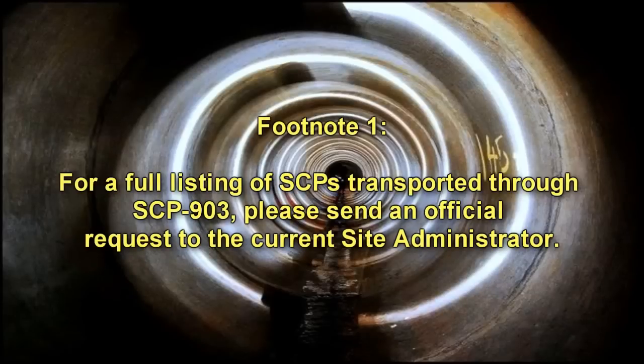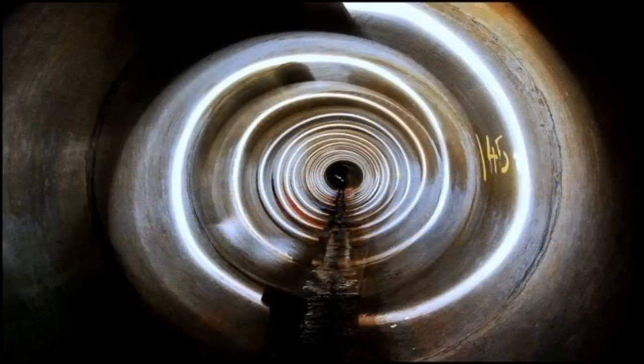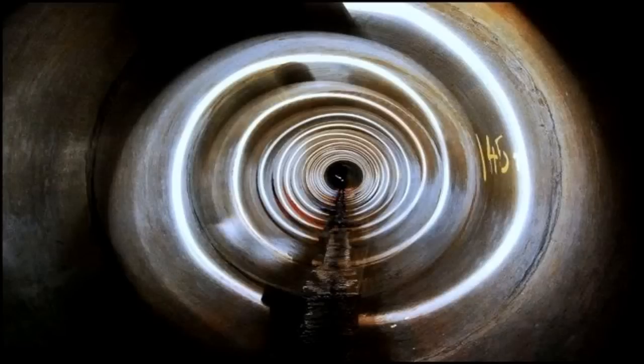Once the instances of SCP-903-X are removed from SCP-903, they will deteriorate and lose their anomalous properties after approximately two hours, assuming they weren't already destroyed beforehand. The handwritten notes included with the instances of SCP-903-X suggest that SCP-903 is somehow connected with a sapient entity capable of manufacturing instances of SCP-903-X. Attempts to trace the source of the notes based on composition of the ink and paper, as well as handwritten analysis, have so far failed to produce any results.